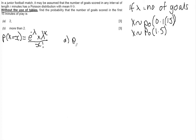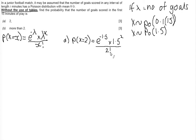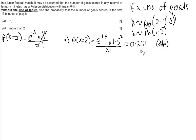For part a, we find P(X = 2). We substitute lambda = 1.5 and x = 2 into the formula, giving e to the minus 1.5 times 1.5 to the power of 2, all over 2 factorial. When we put this into the calculator, we get an answer of 0.251, rounded to three decimal places. Remember to state your rounding, as this is an irrational number that goes on and on.